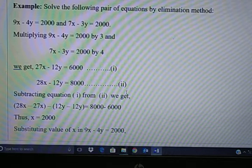And the second equation is multiplied by 4 where you get 28x minus 12y equals 8000. Now you got variable y which is having equal value, so you can eliminate that variable and find out the value of x.